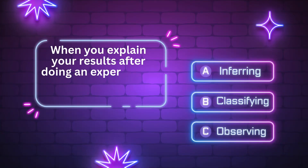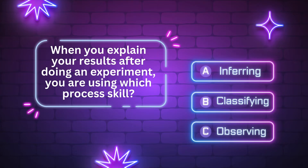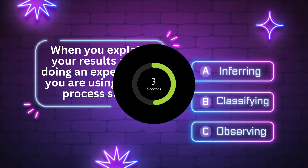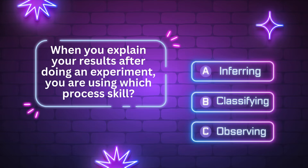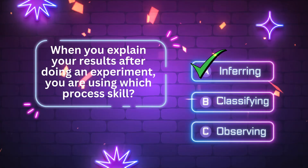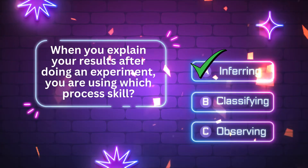When you explain your results after doing an experiment, you are using which process skill? A. Inferring. B. Classifying. C. Observing. The answer is letter A. Inferring. Good job. Let's move on to the next question.